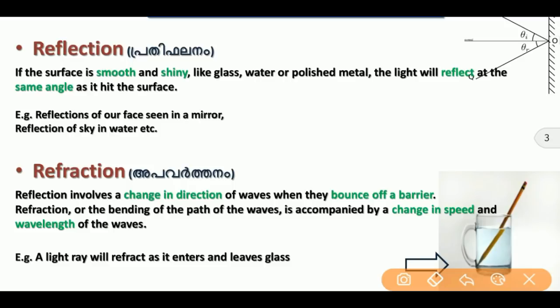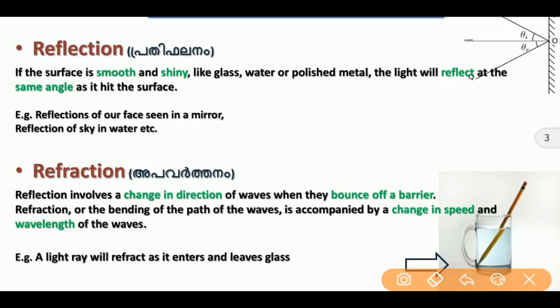Reflection involves a change in direction of the light wave when it passes through or bounds off a barrier. This is what we call reflection or refraction depending on the medium — for example, when light passes through glass or water.